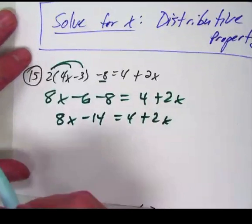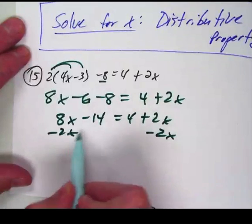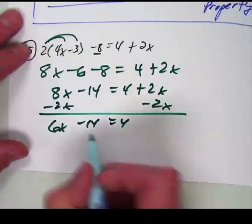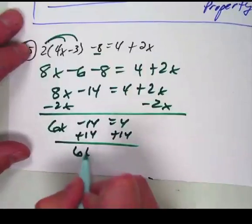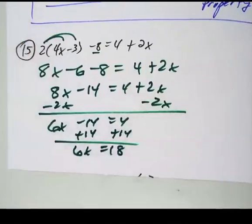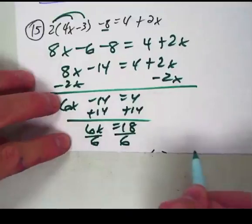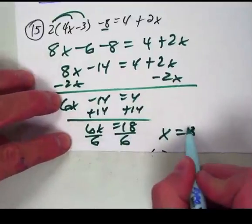Put the letters on one side and the numbers on the other, so I'm going to subtract 2x from both sides, and now I've got 6x minus 14 equals 4. Add 14 to both sides: 6x equals 18. Now I need to do the division — divide both sides by 6 — and 18 divided by 6 is 3, so x equals 3.